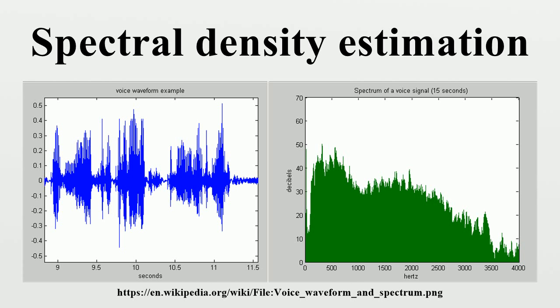The Fourier transform of a function produces a frequency spectrum which contains all of the information about the original signal, but in a different form. This means that the original function can be completely reconstructed by an inverse Fourier transform.